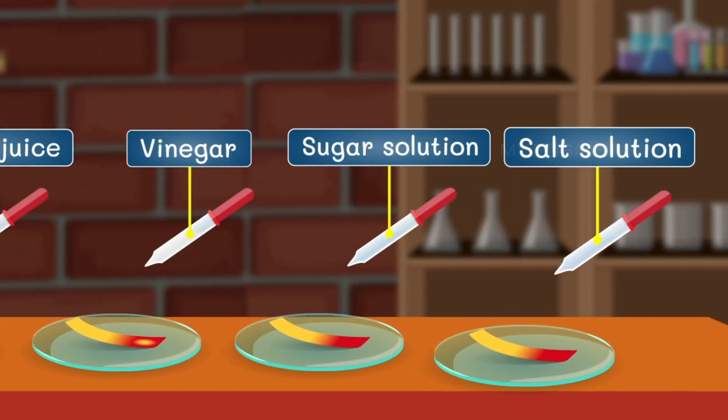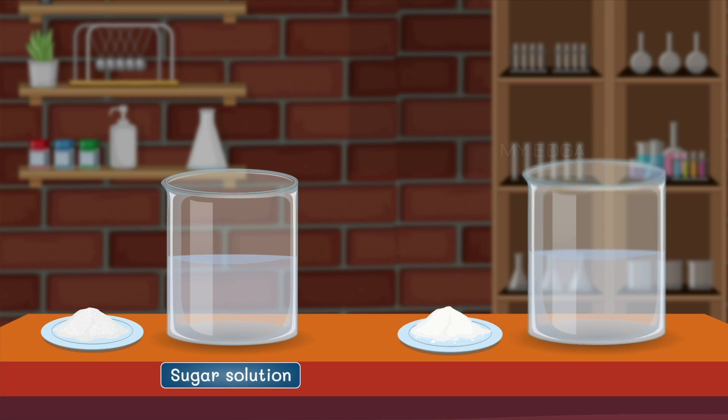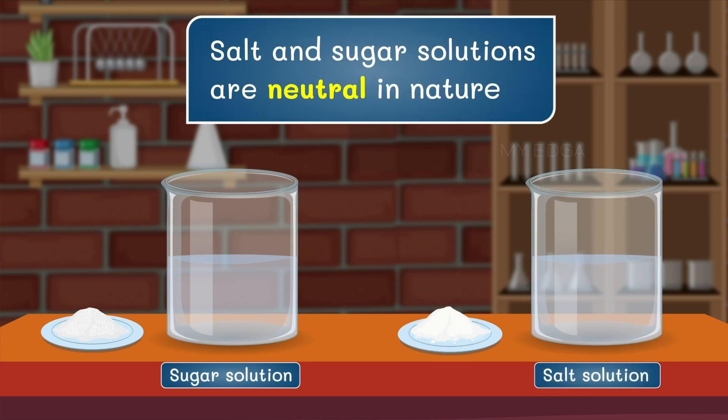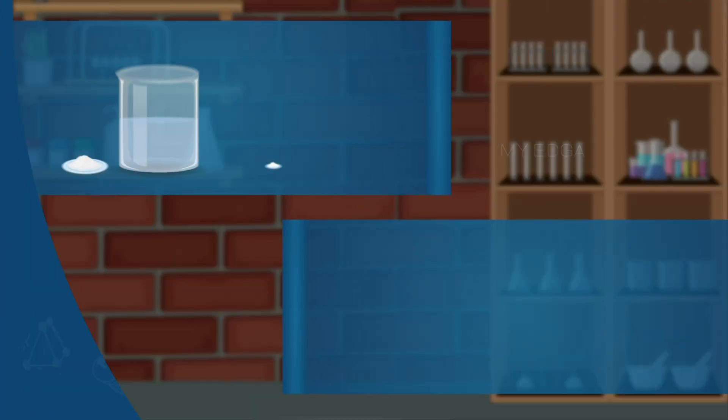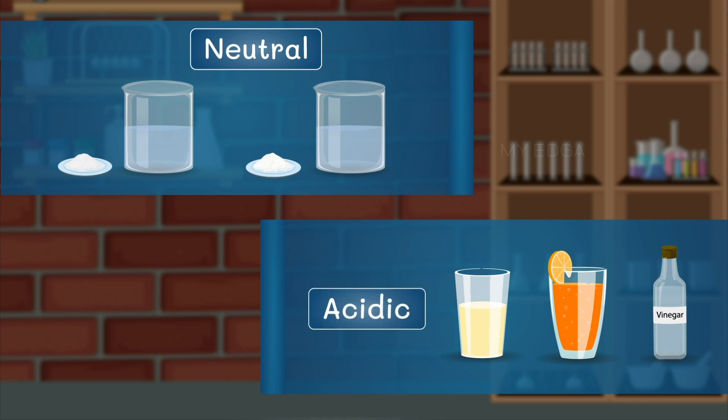The salt and sugar solution, on the other hand, did not show any effect on the used turmeric paper also. Thus we can say that salt and sugar solutions are neutral in nature, while lemon juice, orange juice and vinegar are acidic in nature.